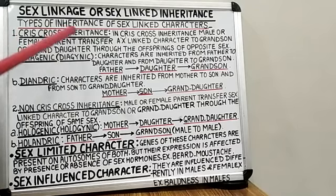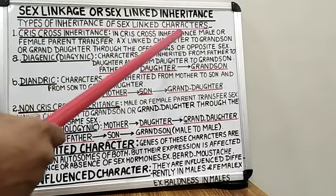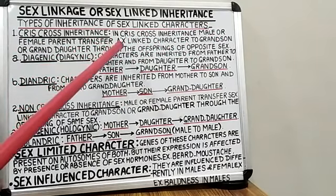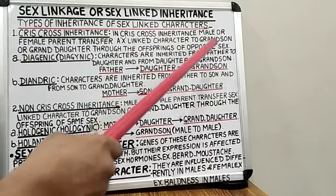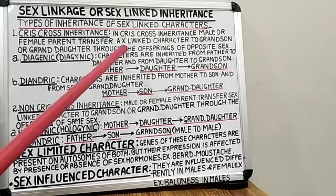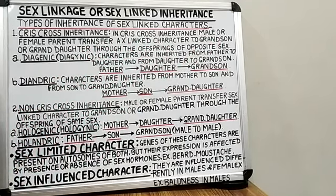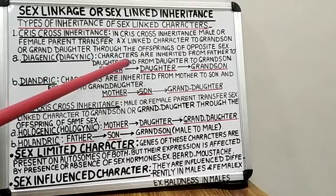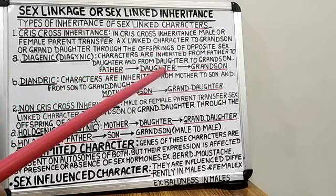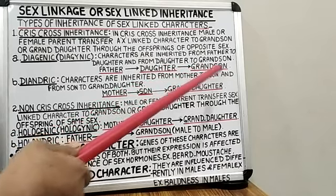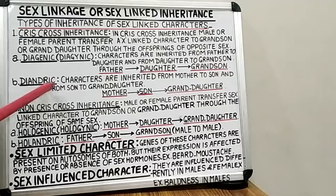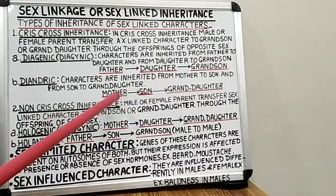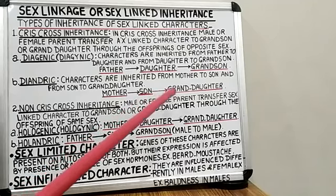First is crisscross inheritance. In crisscross inheritance, a male or female parent transfers an X-linked character to a grandson or granddaughter through offspring of the opposite sex. It is of two types: diagenic or diagynic, and diandric. In diagenic or diagynic type, characters are inherited from father to daughter and from daughter to grandson. In diandric type, characters are inherited from mother to son and from son to granddaughter.